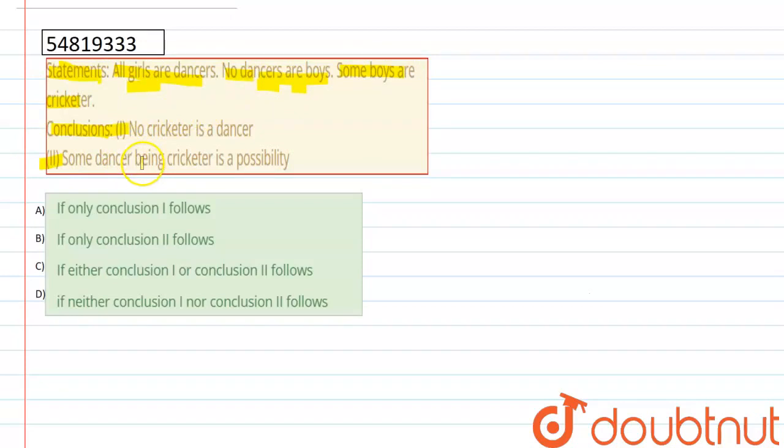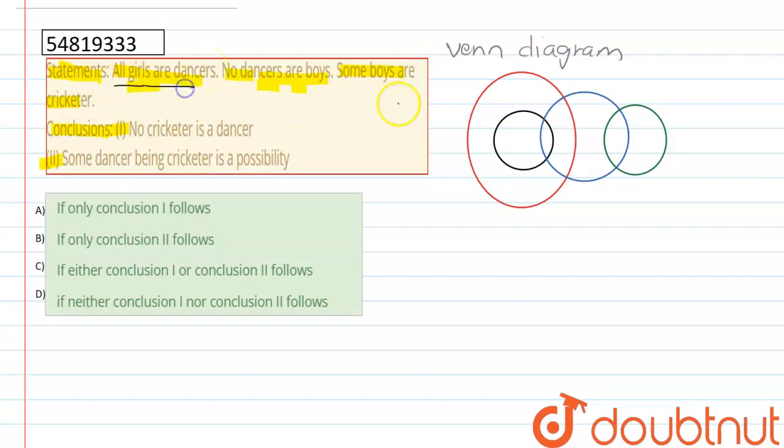So, we have to solve this question. This type of question is done in Venn Diagram. So, here we have to say that all girls are dancers. So, we have to explain that all girls are dancers.